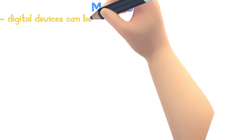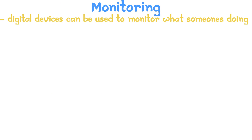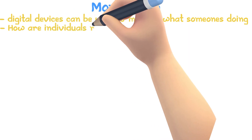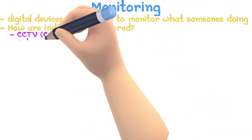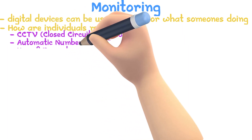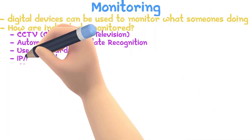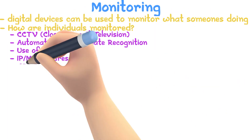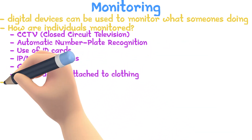Digital devices can be used to monitor what someone is doing, and there is a lot of controversy surrounding this. Here is how individuals' movements are monitored: CCTV (closed circuit television), automatic number plate recognition, use of ID cards, IP or MAC addresses, GPS data, or GPS trackers attached to clothing.